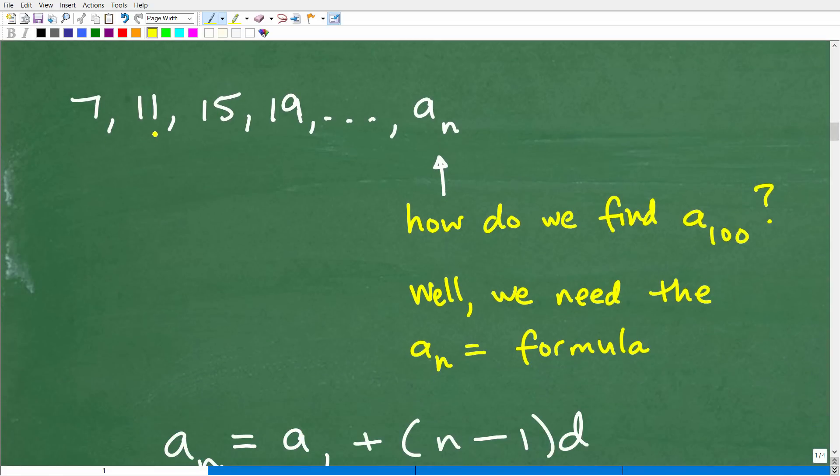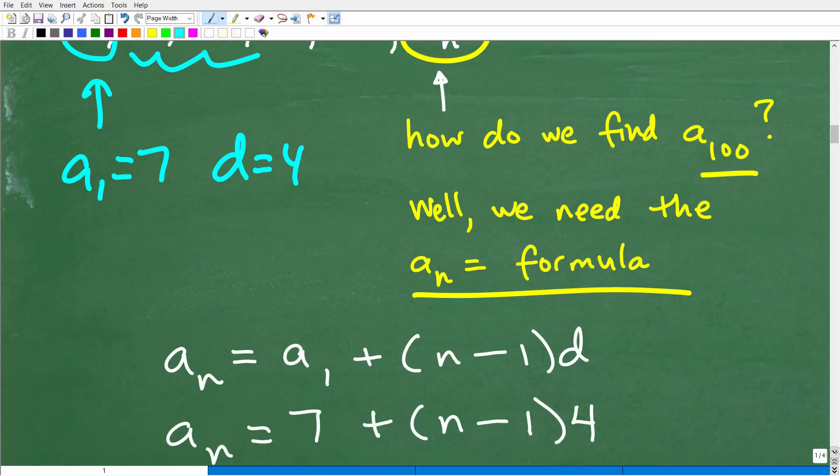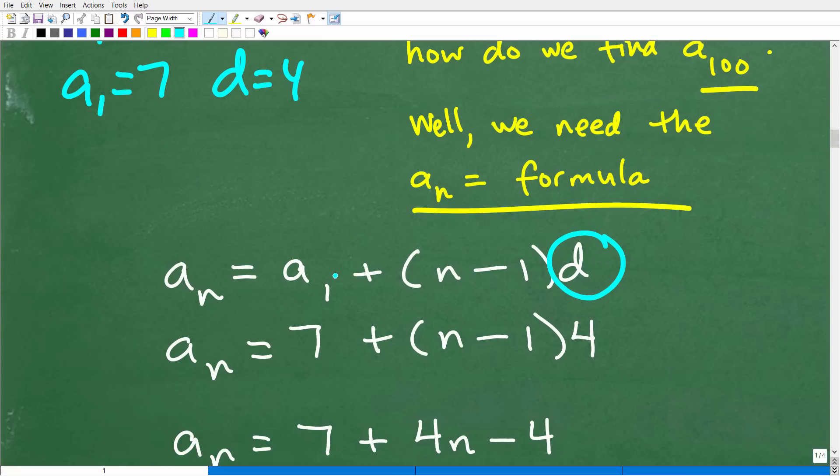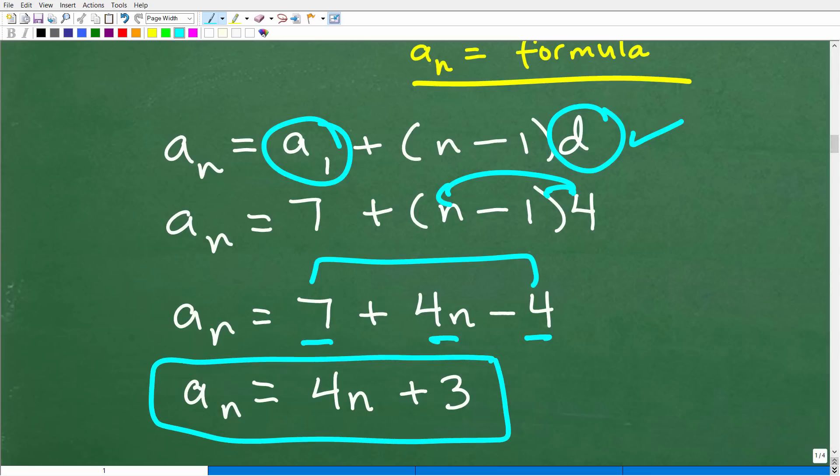So here is our problem. We have 7, 11, 15, 19. Well, we want the a sub n formula. So how do we find a 100? Well, we've got to get that formula first because we're not going to do all this math. So we're going to need a sub 1, which we have. So a sub 1 is 7. And we can see here that the common difference is 4. That's what we're adding to get to the next value in this sequence. So let's go ahead and plug in this information into the formula. So a sub n is equal to a sub 1 plus n minus 1 times d. So the things that we're going to plug in is d and a sub 1. The n is going to stay as part of our formula. So a sub 1 is 7. So we're going to have 7 plus parenthesis n minus 1. d, again, is 4. That's our common difference. So now we can use the distributive property. 4 times n is 4n. 4 times 1 is 4. So we have 7 plus 4n minus 4. And then, of course, we can add these numbers right here. And we get a sub n is equal to 4n plus 3.